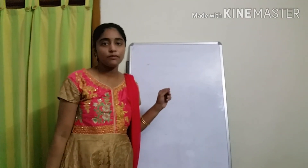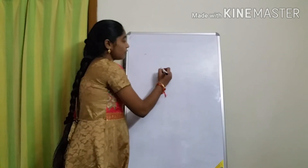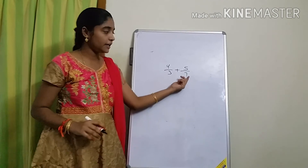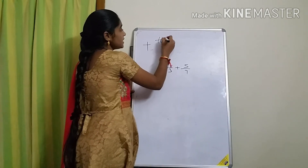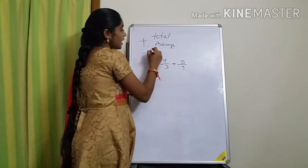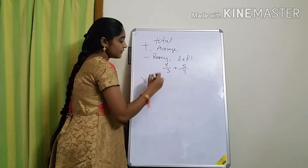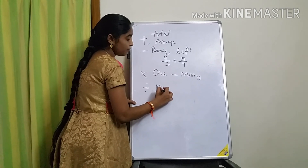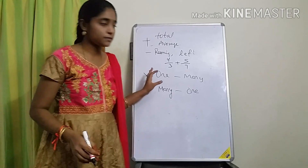Everyone understood how to solve word problems with fractions. For addition: if denominators are different, find the LCM, make denominators same, then add. Subtraction is the same method. Keywords: addition uses 'total' or 'sum'; subtraction uses 'remaining' or 'left'; multiplication means given for 1, asking for many; division means given for many, asking for 1. These are the key keywords to solve the problems.